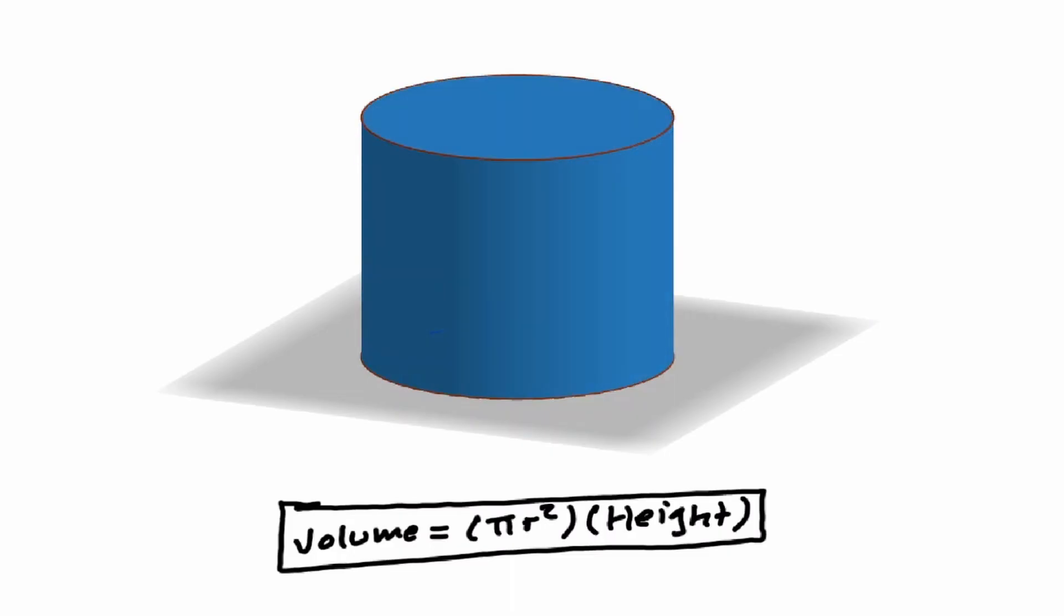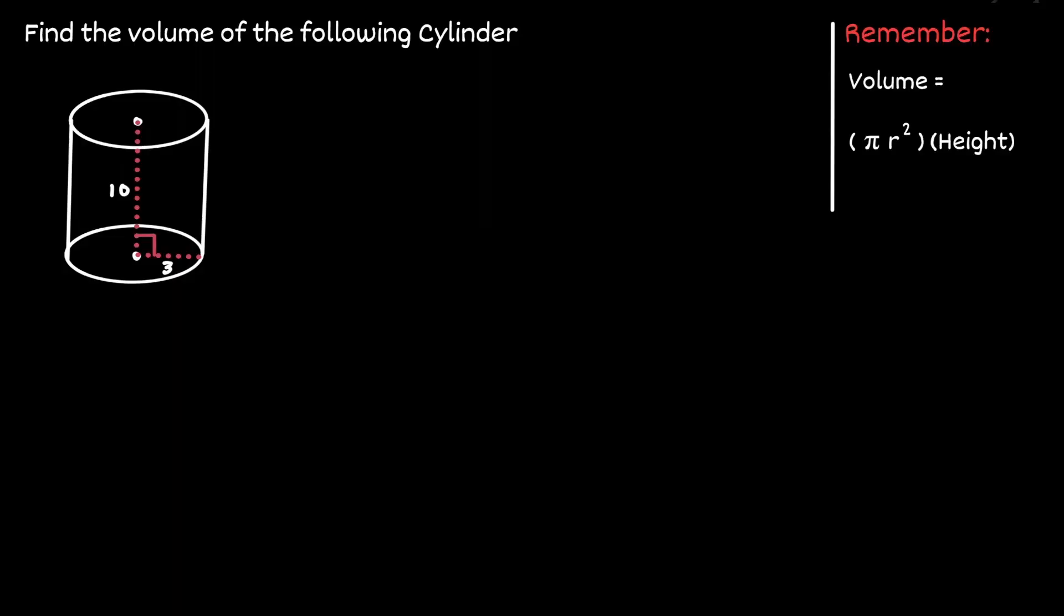Area of the base times the height. Let's take a look at one example. So we have the final formula for the volume of a cylinder. It is the area of the circle in the base, pi r squared, times the height.